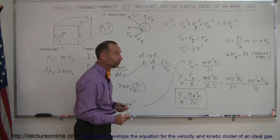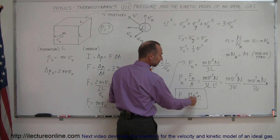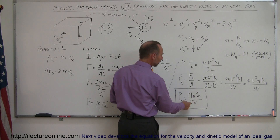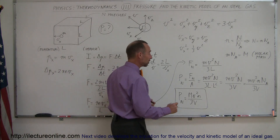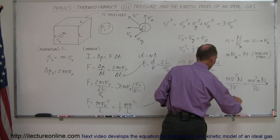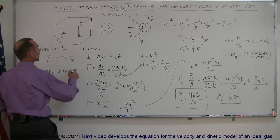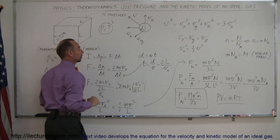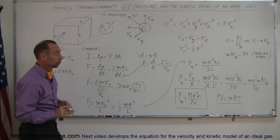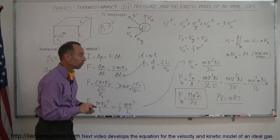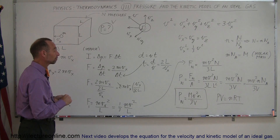This is the final form of the pressure equation for a gas: pressure equals the molar mass times v² times the number of moles, all divided by 3 times the volume. Later we'll compare this to PV equals nRT to find the relationship between velocity and temperature. We've accomplished our goal of finding the pressure in a box due to a gas. Note that the v here is actually the RMS velocity — the root mean square velocity — which represents the effective velocity of all molecules in the box.